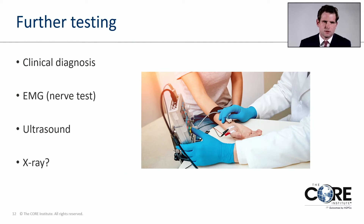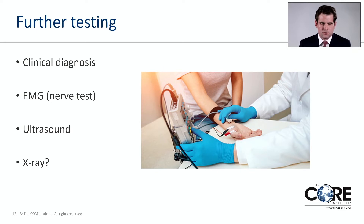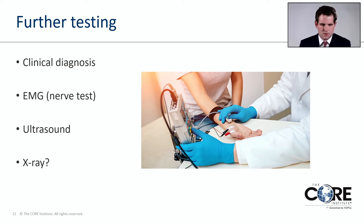Carpal tunnel is a clinical diagnosis, which means no further testing is necessary to diagnose the condition or proceed with treatment. One test commonly performed is an EMG or nerve test. This can confirm the diagnosis, provide information on severity — whether it's mild, moderate, or severe — and indicate how healthy the nerve is, which gives some information on what to expect after treatment, specifically surgery. The nerve test can also identify other causes of numbness, such as peripheral neuropathy.